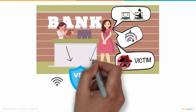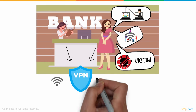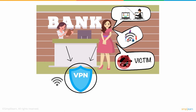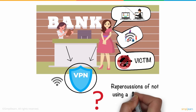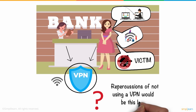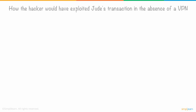Like most of us, Jude had come across the term VPN several times but didn't know much about it, and little did she think that the repercussions of not using a VPN would be this bad. Let's understand how the hacker would have exploited Jude's transaction in the absence of a VPN.